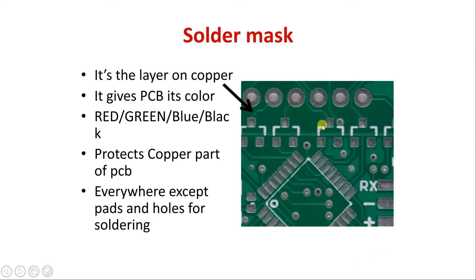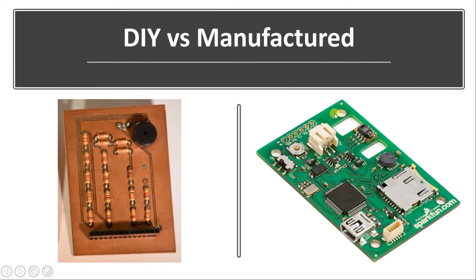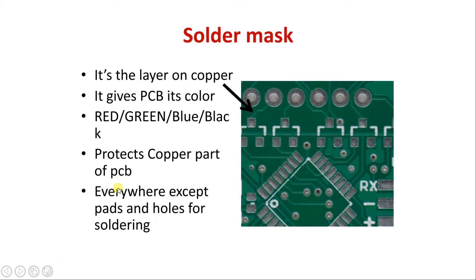On machine-made PCBs, one very common thing is present called a solder mask. We see that the PCB looks green, red, and there are a number of such colors, as we can see. But in the handmade PCB, everything is the copper color. That green color is called the solder mask — it is a particular non-conductive paint or color layer onto the copper which gives the PCB its color. The most popular and common colors are red, green, and blue, as well as black.